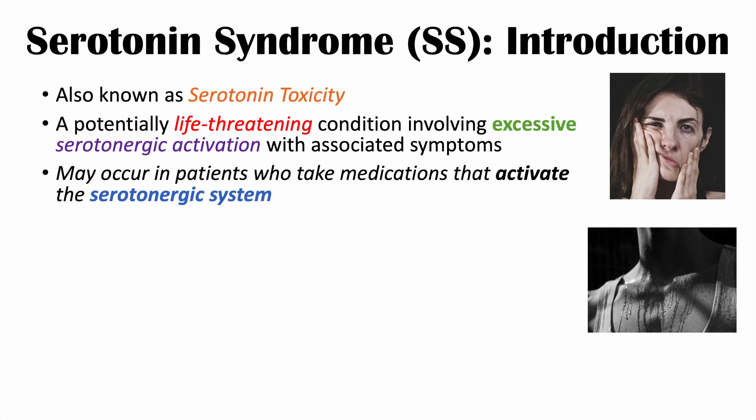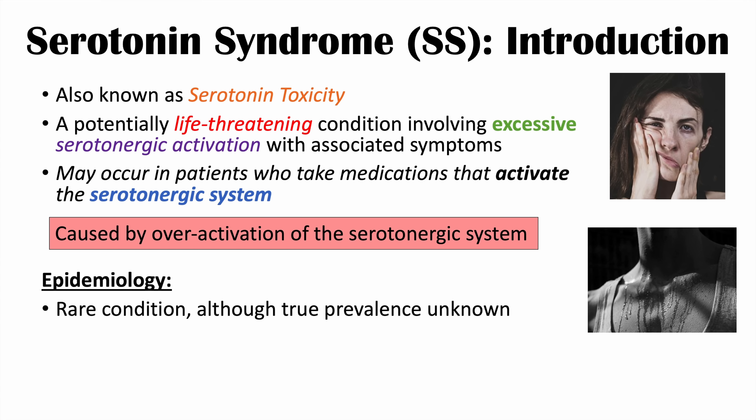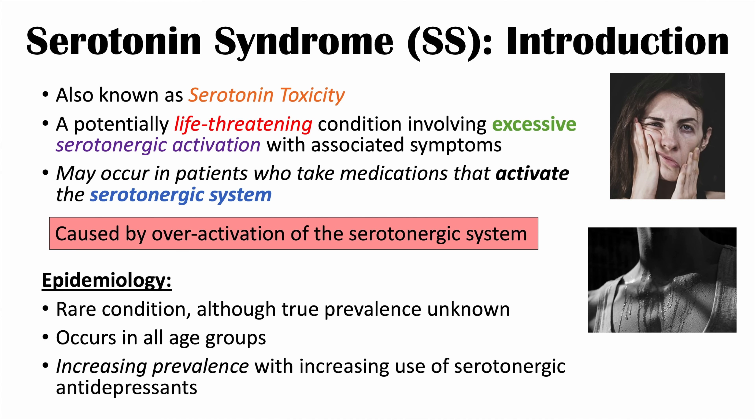This condition may occur in patients who take medications that activate the serotonergic system, and it is caused by overactivation of the serotonergic system. Serotonin syndrome is considered a rare condition. Although the true prevalence is unknown, it likely occurs more often than reported, but as milder cases. It occurs in all age groups, and there is an increasing prevalence with the increasing use of serotonergic antidepressants.